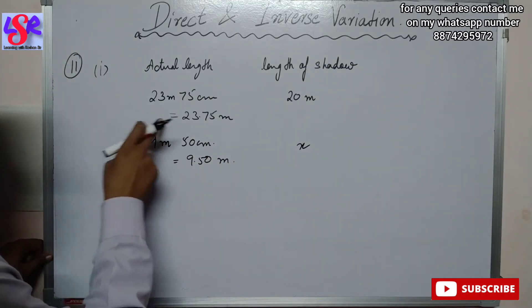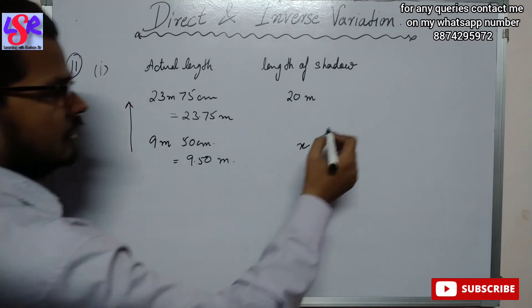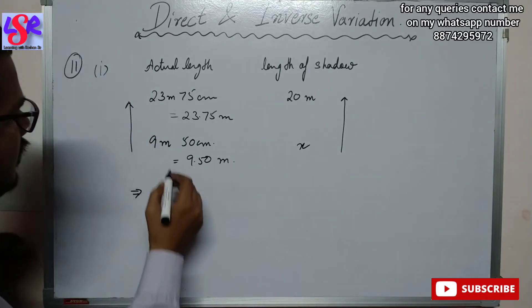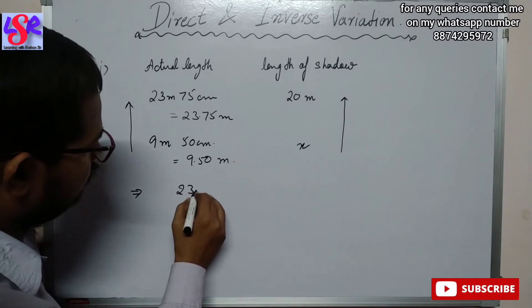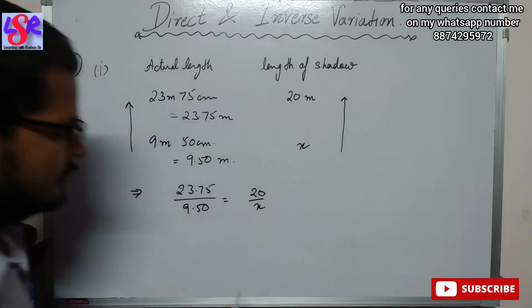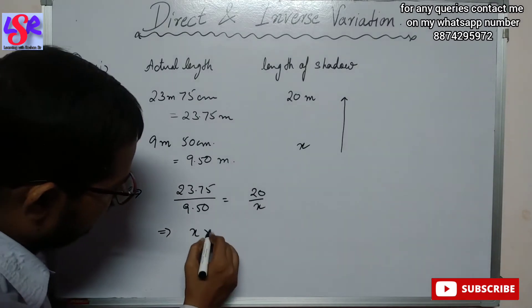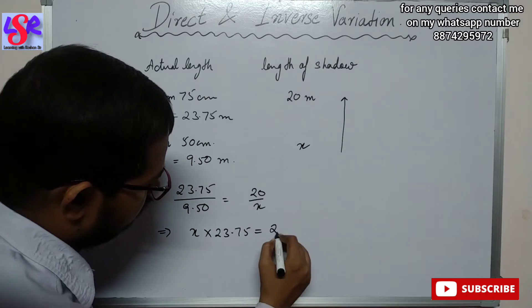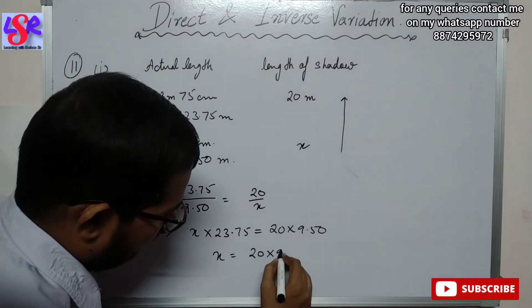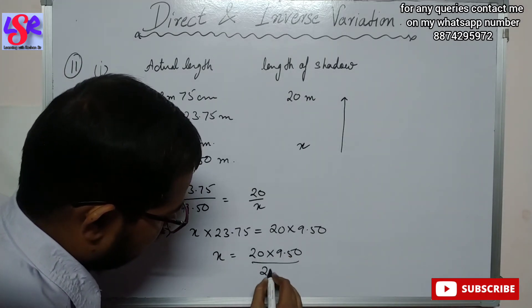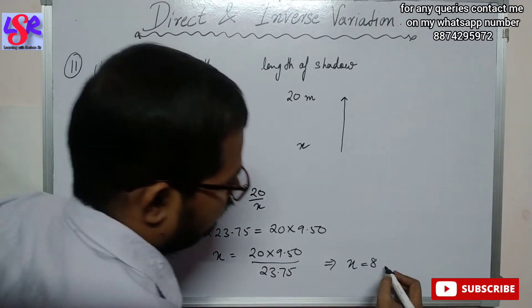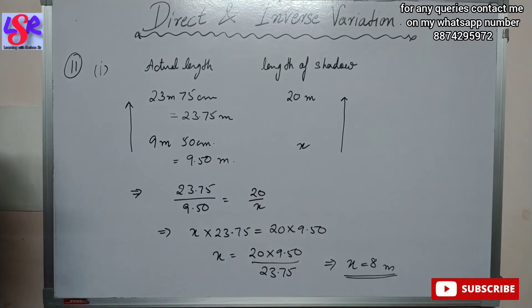Since 23.75 is greater and 9.50 is smaller, we put the arrow in this direction, and this is a direct proportion. We write: 23.75 upon 9.50 equals to 20 upon x. Cross multiplying: x into 23.75 equals to 20 into 9.50, so x equals to 20 into 9.50 upon 23.75. Solving this, we get x equals to 8 meter. So the length of the shadow cast by the tree is 8 meter.